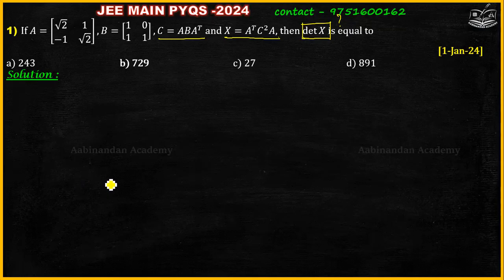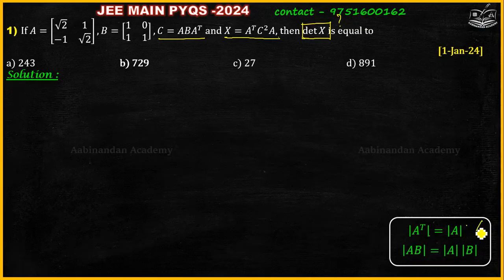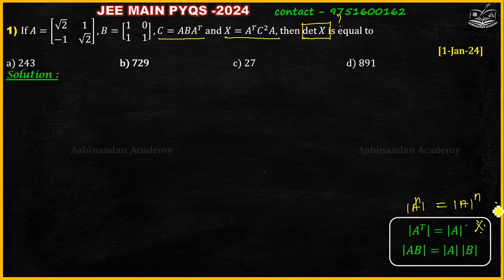First, we will go to the properties of determinants. There are three important properties. First: determinant of A transpose equals determinant of A. Second: determinant of AB equals determinant of A into determinant of B. Third: determinant of A to the power N equals determinant of A, the whole power N. I am using these properties for this problem.